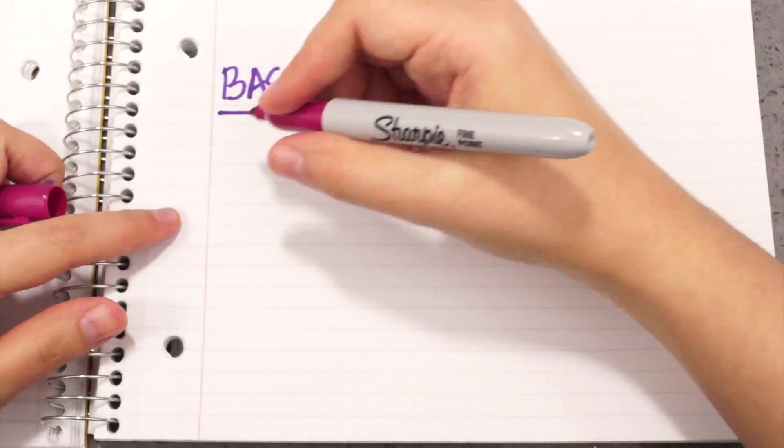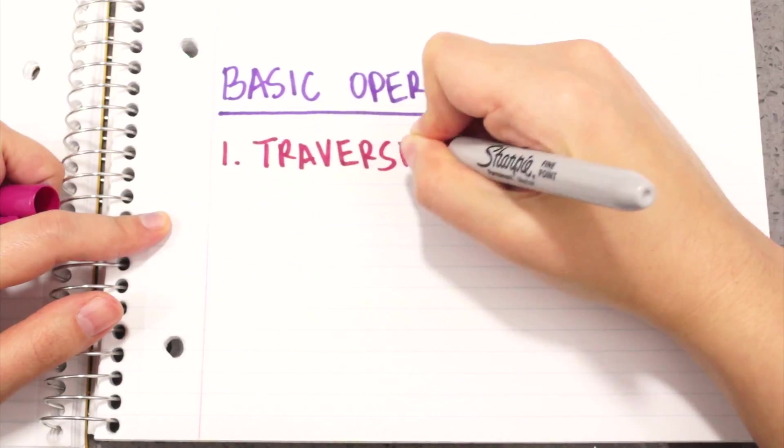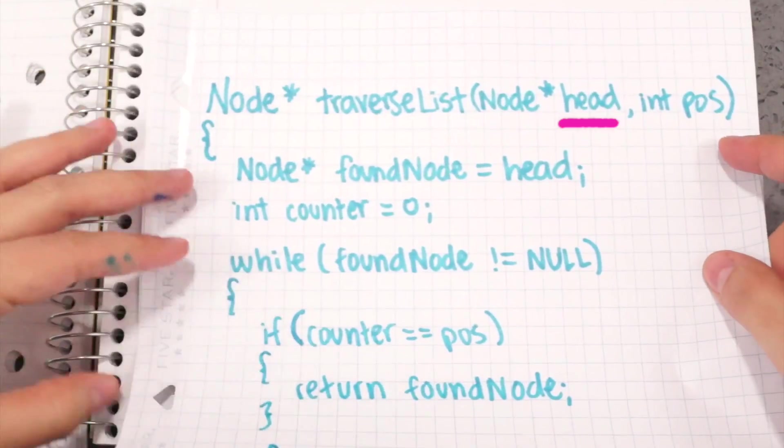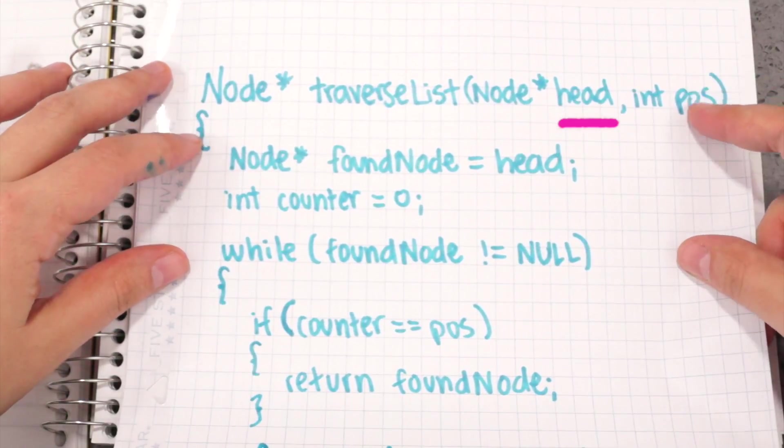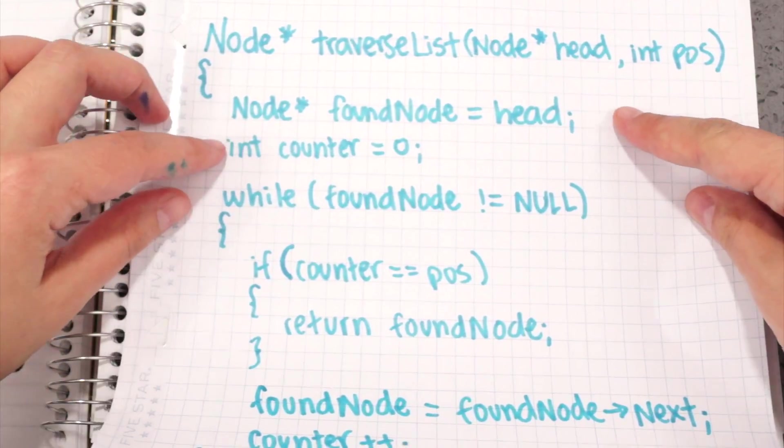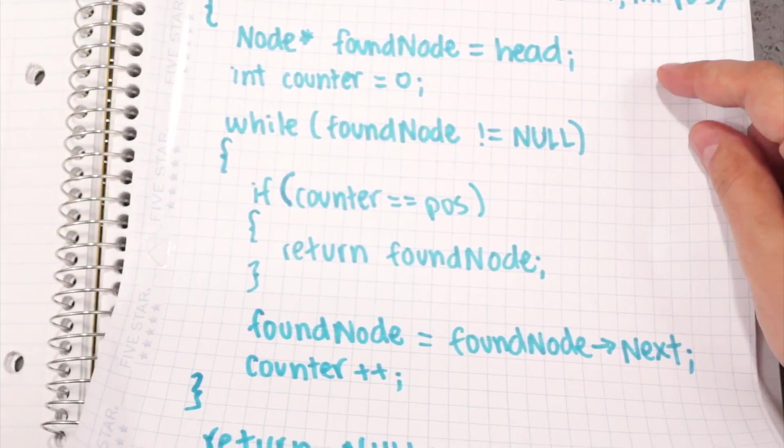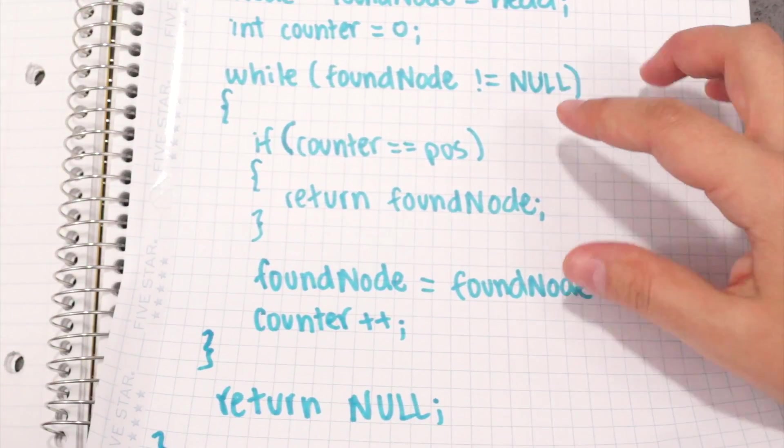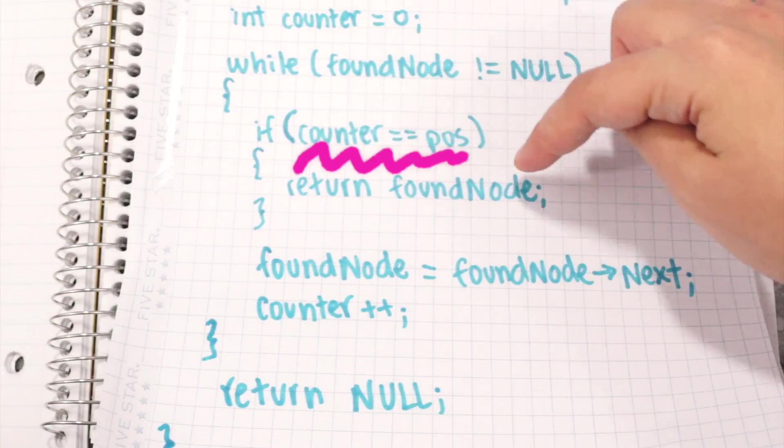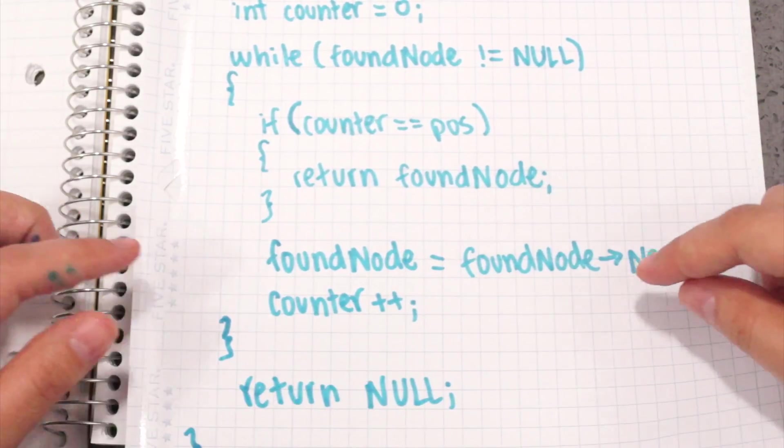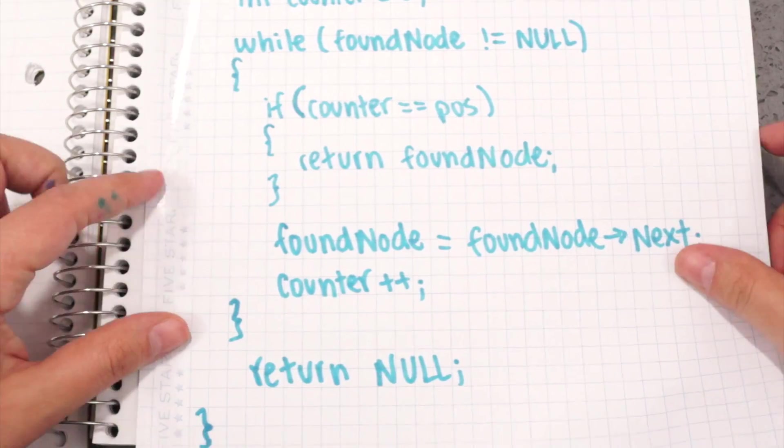Let's go over some basic operations. Let's start with traversing. In this function, I pass a pointer to the head of the list and the position of the node I'm trying to find. Then, I iterate through the list, and if the counter matches the number of the position, I have found the node that I was looking for. If not, I go to the next node until I find it.